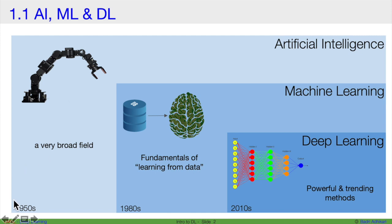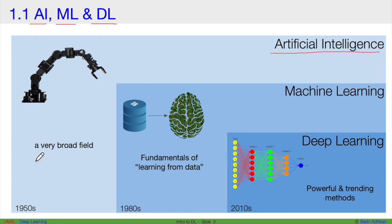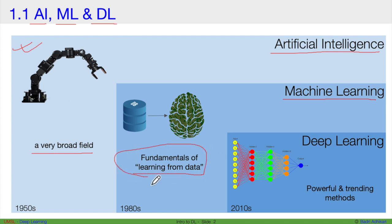Here is an example. To enable the cursor pen, I can go to the bottom left corner and click pen. I can also do Ctrl-P. Although the terms artificial intelligence, machine learning and deep learning are used interchangeably, they are different. Artificial intelligence is a very broad field. And machine learning is a subset within artificial intelligence. It deals with fundamentals of learning from data.